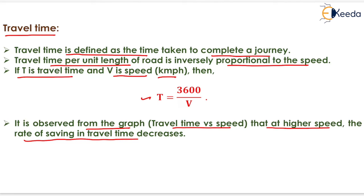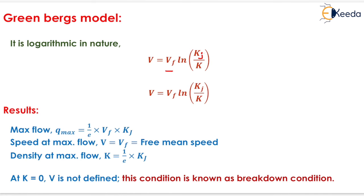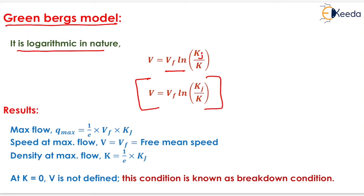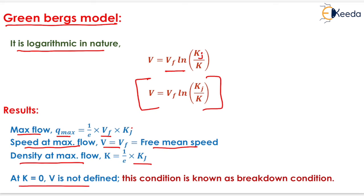The next topic is Greenberg's model. It is logarithmic in nature and is given by Vs equals Vf into natural log of Kj upon K. Results of Greenberg's model: maximum flow Qmax equals 1 by E into Vf into Kj; speed at maximum flow V equals Vf, the free mean speed; density at maximum flow K equals 1 by E into Kj. At K equals to 0, V is not defined — this condition is known as the breakdown condition.